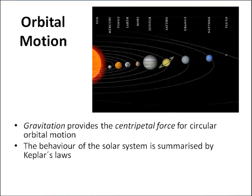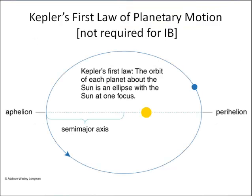I'll still give you a bit of background on Kepler's three laws. Kepler's first law: the orbit of each planet around the sun is an ellipse with the sun at one focus point. So we have these ellipse-like orbits, and as I said, the IB is just thinking about circular motion, so we don't need to worry about this at all.